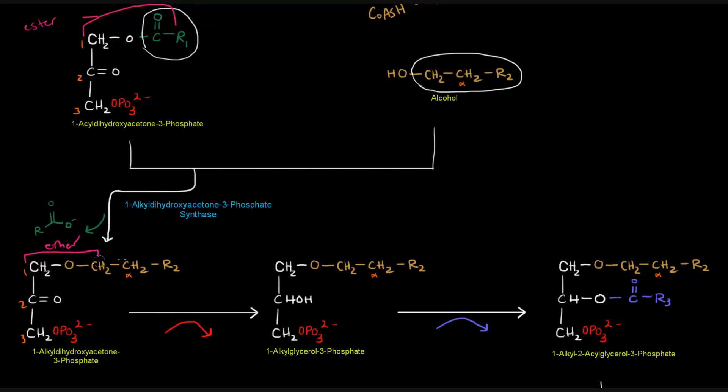So once we have that alkyl group at carbon number 1, we're going to convert this molecule to 1-alkyl-glycerol-3-phosphate. The difference between these two is basically at carbon number 2 - there's an alcohol instead of a carbonyl. So that's a reduction. The enzyme that catalyzes this reaction is 1-alkyl-dihydroxyacetone 3-phosphate reductase. That is a mouthful. The reducing agent here is NADPH again.